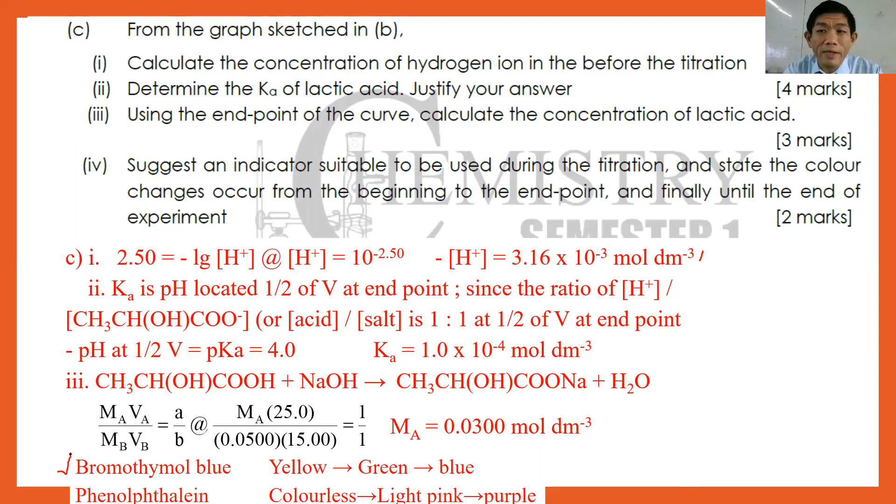For convenience, I usually advise students to memorize phenolphthalein. However, one disadvantage is that it cannot be used for strong acid–weak base titrations. So the safest choice is to memorize the colour changes of bromothymol blue. That is all for question number one.